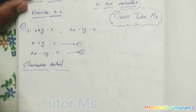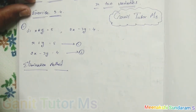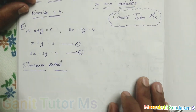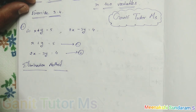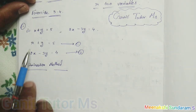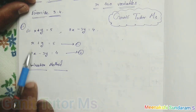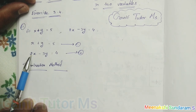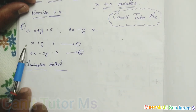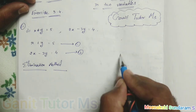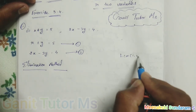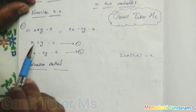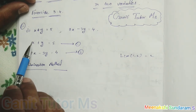In the elimination method, we have to remove any one variable in the given pair of linear equations. In this problem, I am going to remove the variable x. So first I take the LCM of the coefficient of x in the first equation as well as the coefficient of x in the second equation. Here it is 1 and here 2, so the LCM of 1 and 2 is 2.